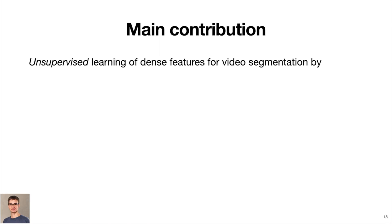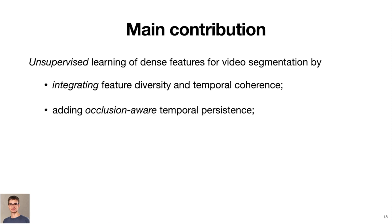To summarize, we presented an unsupervised approach to learning dense feature representations. We formalized and integrated the assumptions on feature diversity and temporal coherence that were previously used only in isolation. We added the assumption on temporal persistence that is conceptually more robust to occlusions than in previous work. Finally, we exploited model equivariance to similarity transformations.